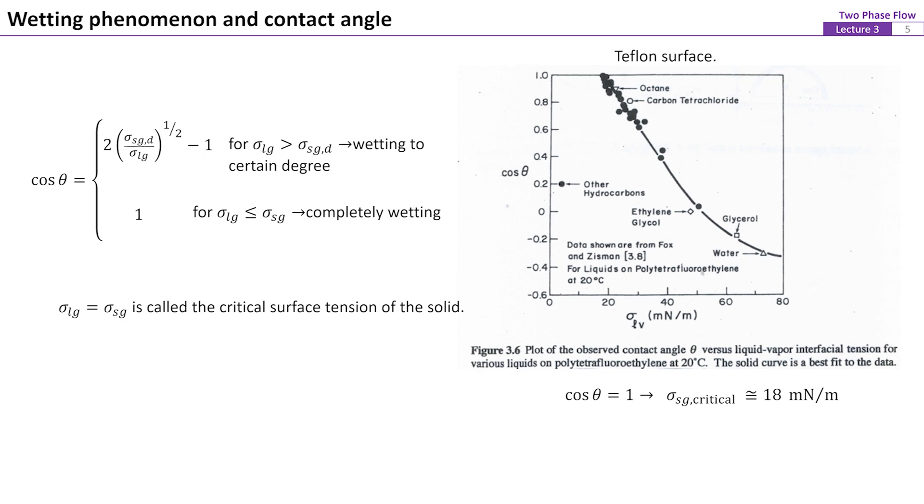This is corresponding to the maximum value of the spreading coefficient as discussed in the previous slide. This figure on the right shows the measured values of contact angle for various liquids on Teflon surface. Sigma sgd can be obtained from this figure where the intersection of the curve with the horizontal axis at cosine theta equals 1. This value is called the critical surface tension of the solid.